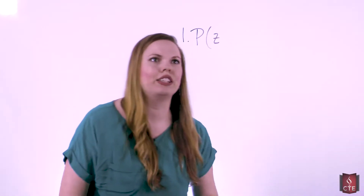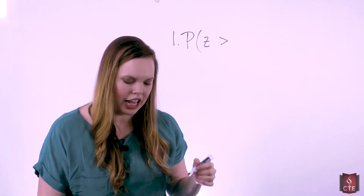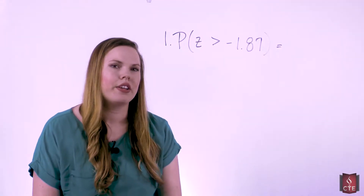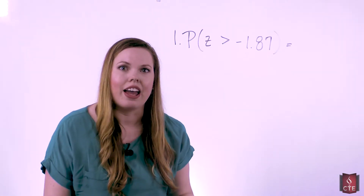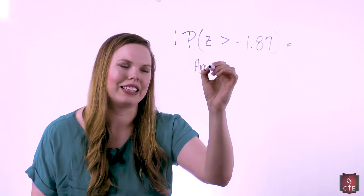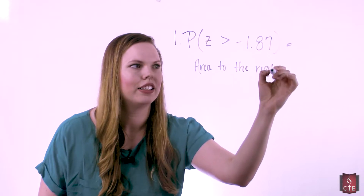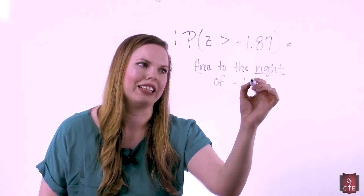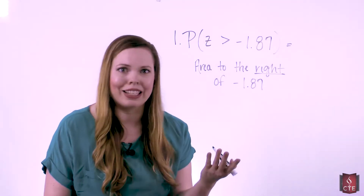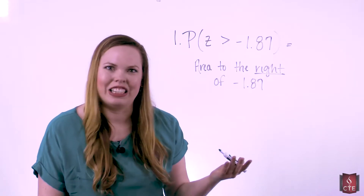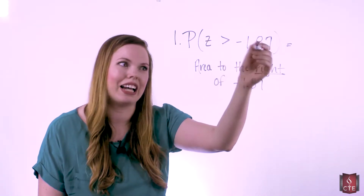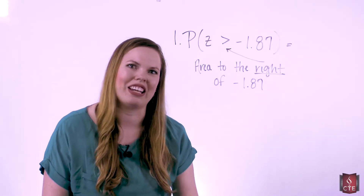Now let's look at the probability that z is greater than negative 1.87. This time we have greater than, not less than. Less than is the area to the left, but greater than means we want the area to the right — to the right of negative 1.87. For negative numbers, you're just using the other side of the table, no different from a positive value. The key difference is the greater than sign means the area is to the right.